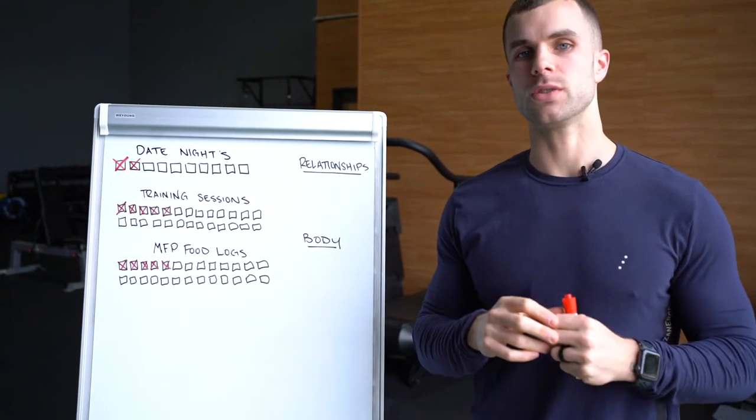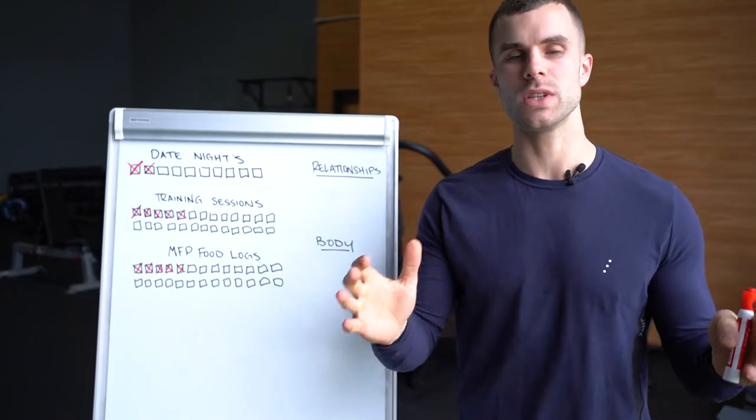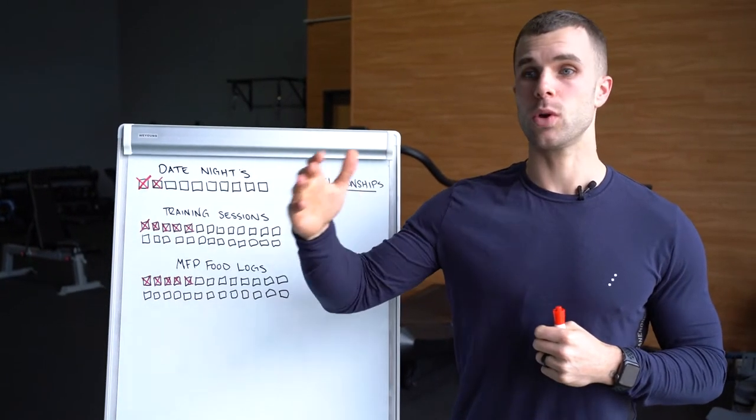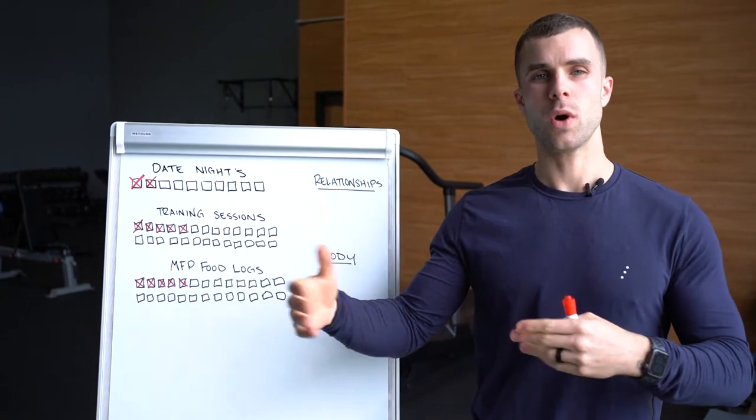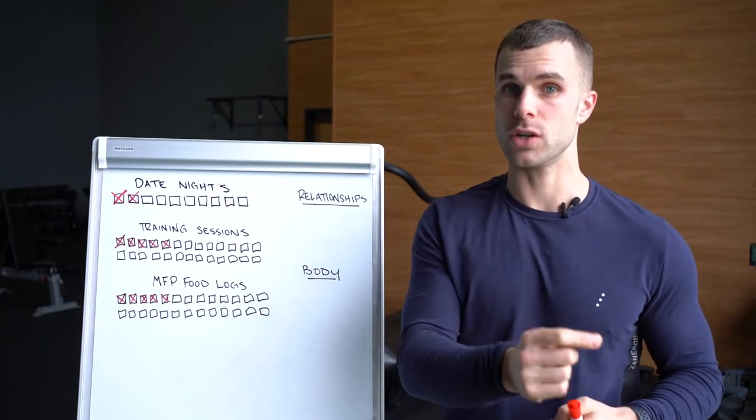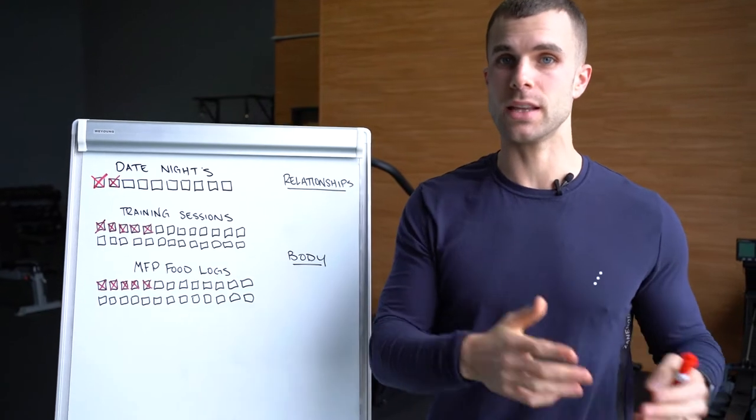I set goals in each of those categories, but the biggest key of setting goals is understanding the path to get to that goal. You can say, I want to achieve X, Y, Z, but what does it actually take to get there? What are the actions and the habits that the person who achieves that does on a daily and weekly basis?